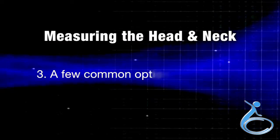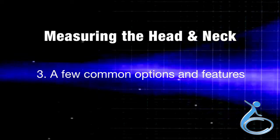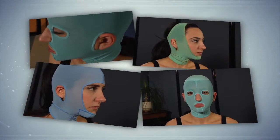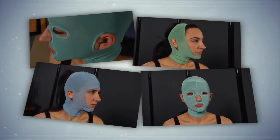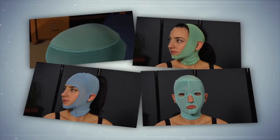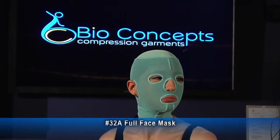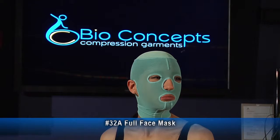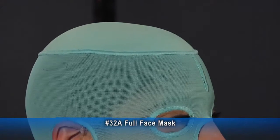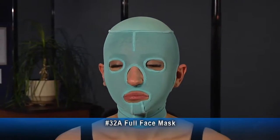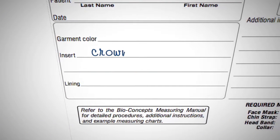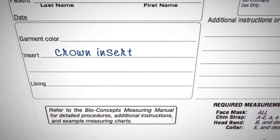Section 3 highlights a few common options and features for head and neck garments. Here are some of the most commonly ordered garment styles — consult the measuring manual for more information. Garment number 32A is the full face mask, which has standard open ears and open nose. In this example it comes with a crown insert, providing a little more cushion on the top of the head with good compression and a softer fabric. If the crown insert or any other option is desired, it must be specified on the measurement chart.